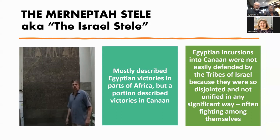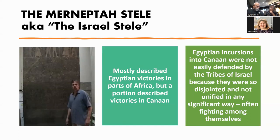The previous slide showed a replica standing at the discovery site. On the left of this slide is the actual original stele — about five feet wide and over ten feet tall — now in the Egyptian Museum in Cairo. This stele mostly described Egyptian victories in parts of Africa, but a portion described victories in the land of Canaan. Egyptian incursions into Canaan were not easily defended by the tribes of Israel because they were so disjointed and not unified.